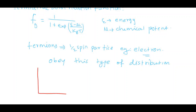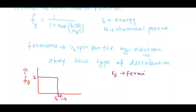This is the graph: fd is on the vertical axis and energy is on the horizontal axis. At T equal to 0 Kelvin, the Fermi-Dirac distribution function is a step function. It equals 1 up to this point, which is called EF — Fermi energy. This step function behavior is at temperature T equal to 0 Kelvin.